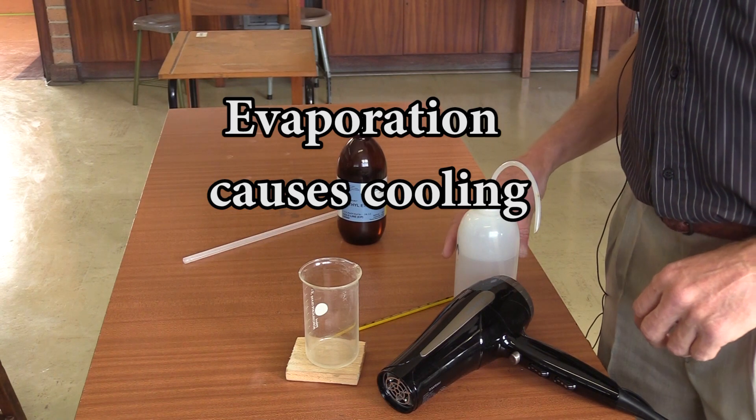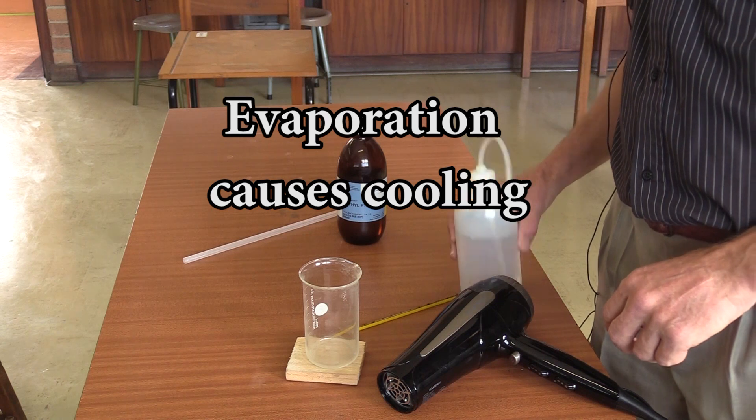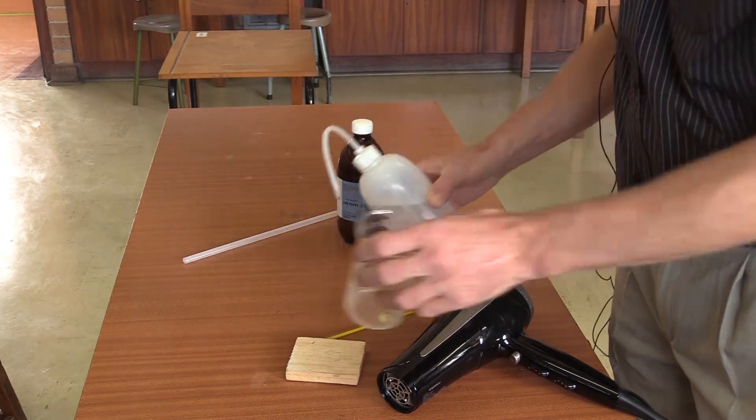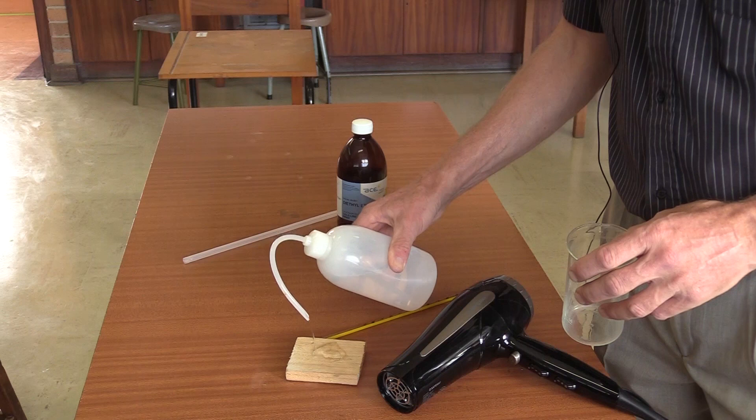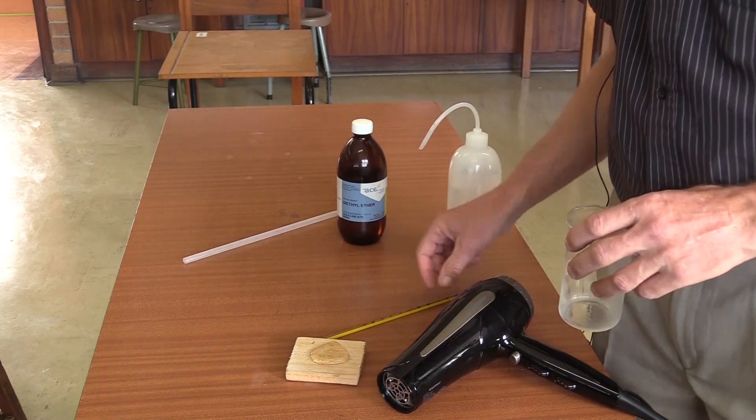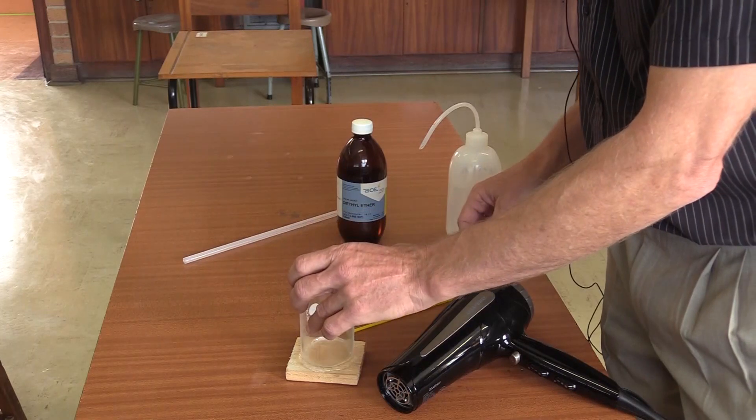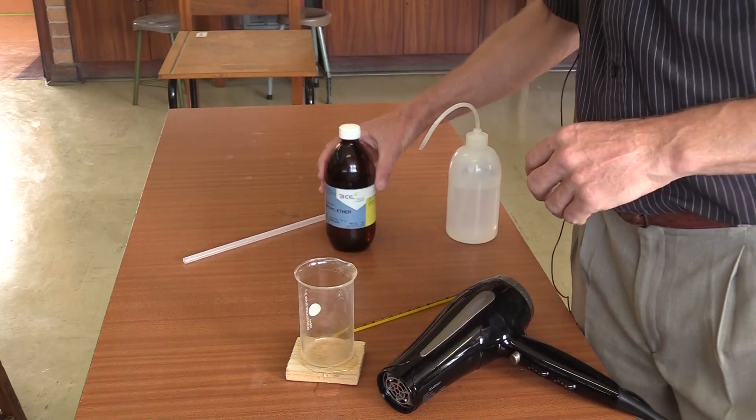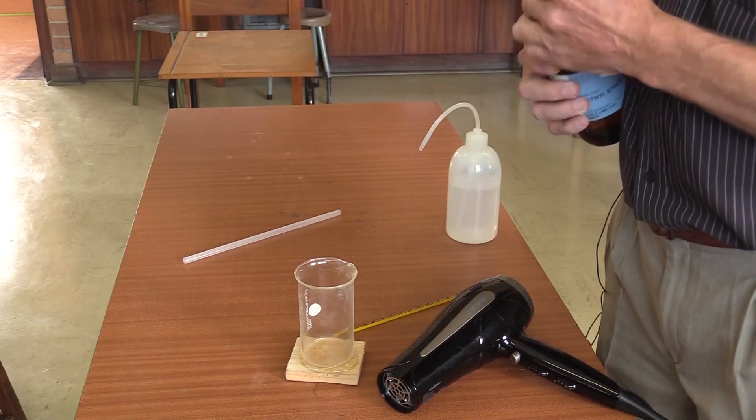This demonstration is to show that evaporation causes cooling. I have a little beaker and a little block of wood. Now I put a small amount of water on the wood and then the beaker on top of the water.